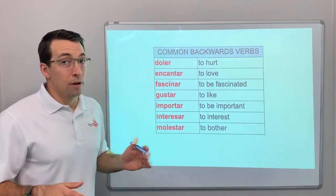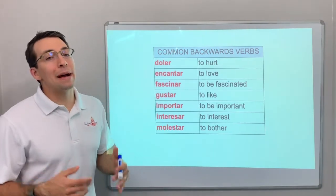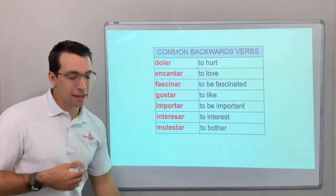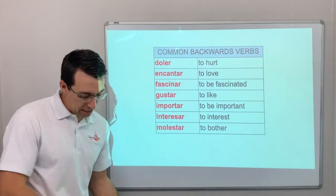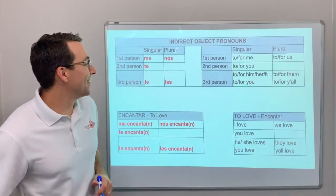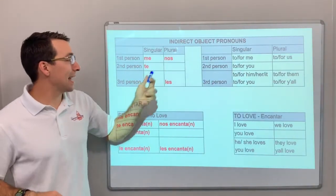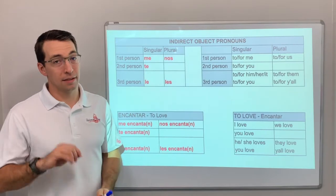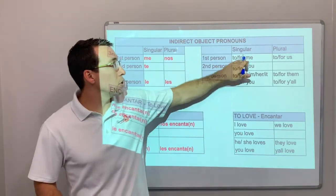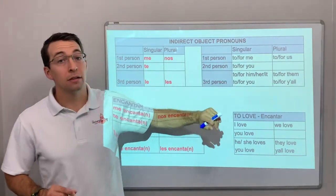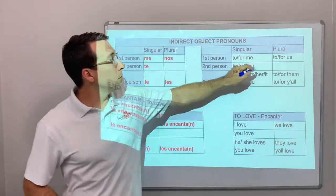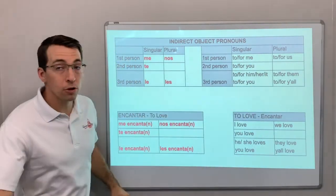Think about this: my knees hurt. Are my knees hurting, or am I hurting? The indirect object pronouns are me, te, le, nos, les. This translates to: to or for me, to or for you, to or for him/her/it, to or for us, to or for them or y'all. These tell you who is receiving the action.